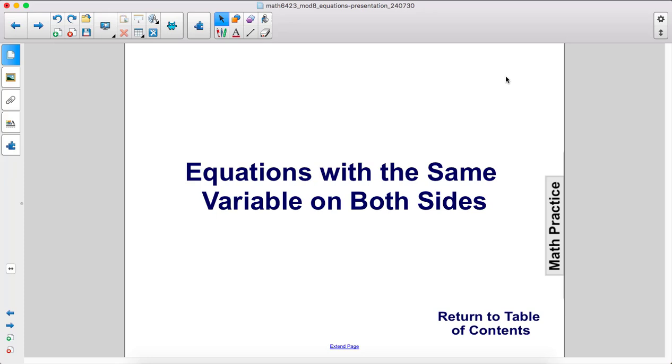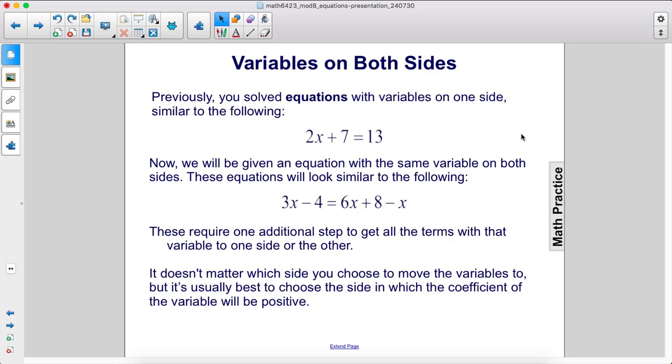Equations with the same variable on both sides. Previously, you solved equations with variables on one side, similar to the following: 2x plus 7 equals 13. x was only on one side.